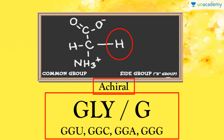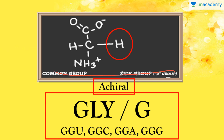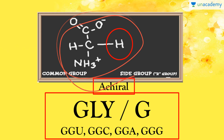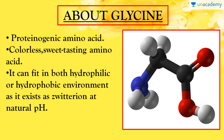If we talk about the structure of glycine, it has a single hydrogen atom as its side chain, making it the simplest and smallest possible amino acid. Its chemical formula is shown here. Glycine is one of the proteinogenic amino acids — meaning protein-forming amino acids — and four codons code for glycine.